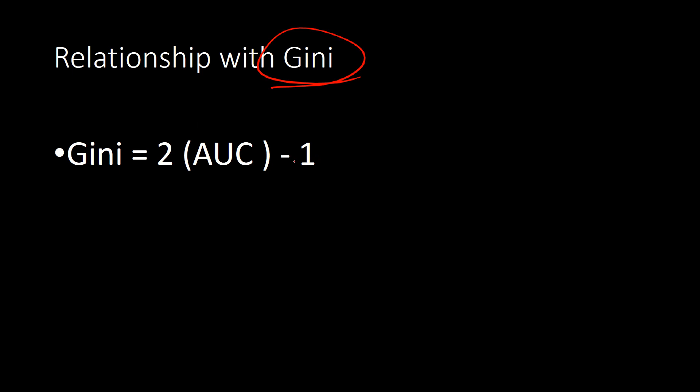Last thing: Gini is also another popular matrix used. We sometimes confuse how Gini is different from AUC or ROC. Gini can be calculated using AUC. Gini equals two times AUC minus one. They're very similar matrices. If you have AUC you can calculate Gini; if you have Gini you can calculate AUC. The bigger the Gini or higher the AUC, the better is the model.